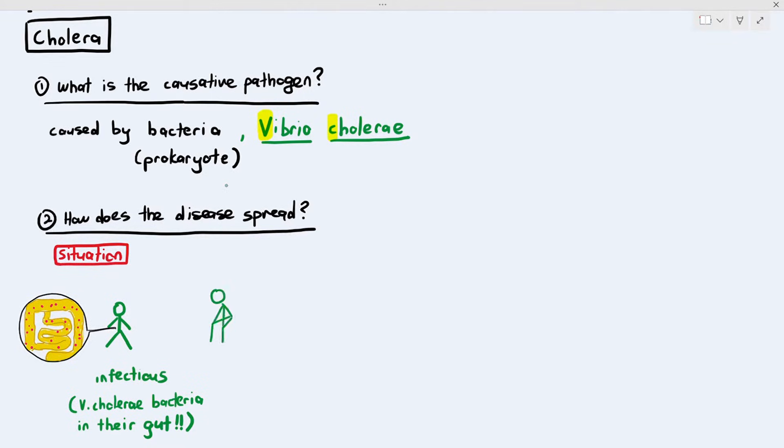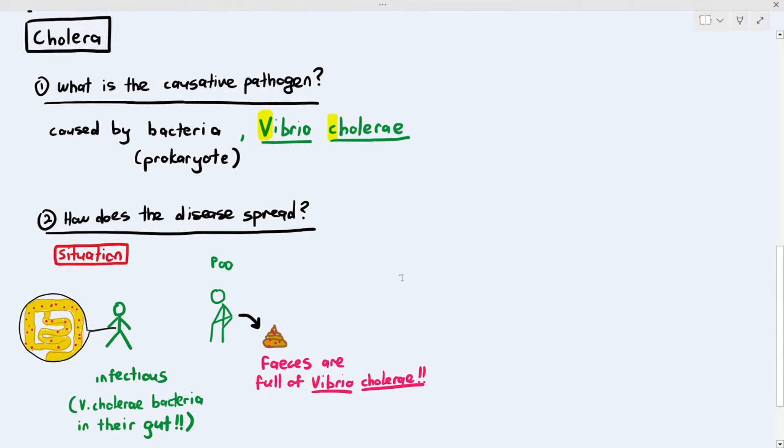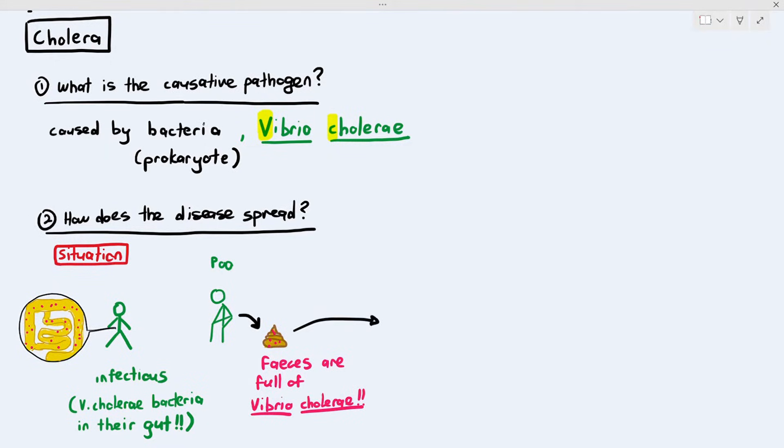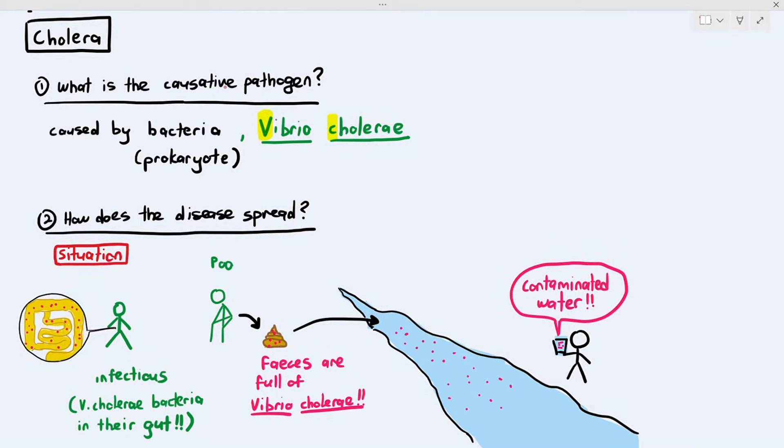How it actually spreads is the infectious person will defecate or poo and their feces will contain the bacteria, full of the Vibrio cholerae bacteria. The feces might accidentally go into the river or the water. When the feces enter the river, the bacteria are now inside the water, and a person who uses the river as a source of drinking water may take the water directly out of the river, and that water is now contaminated. Contaminated water basically means the water contains the pathogen, which in this case is the Vibrio cholerae bacteria. The person drinks the water, and then the bacteria enters another person.